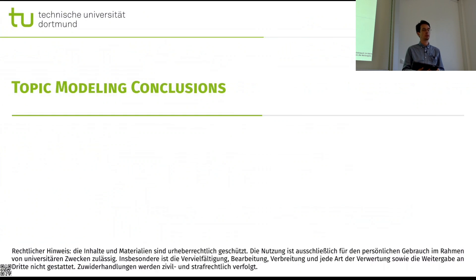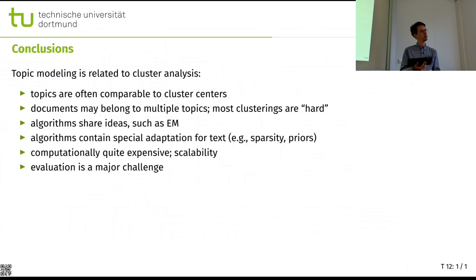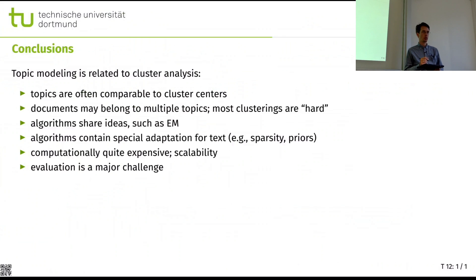For the conclusions of the topic modeling part of this lecture: topic modeling is related to clustering. The topics are often comparable to cluster centers — what was the center vector in spherical k-means is kind of the word distribution in LDA, except one is L2 normalized and the other is L1 normalized. Documents may belong to multiple topics, but most clustering algorithms such as k-means perform hard partitioning. That is not convincing for topic modeling, which is why soft clustering approaches are more appropriate when applied to text.